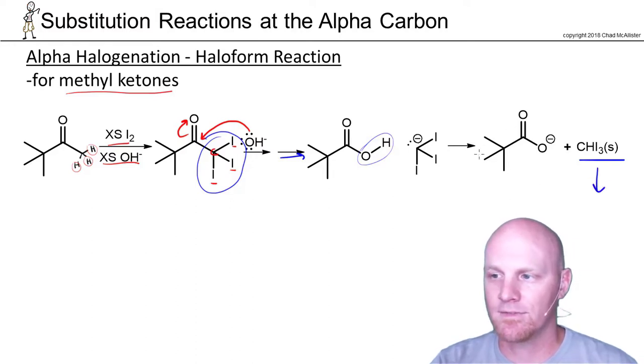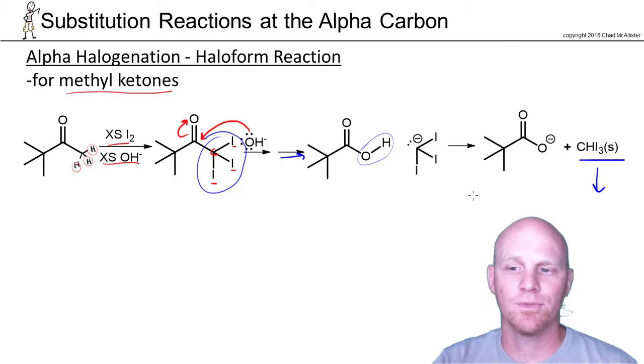This used to be a test for methyl ketones. You'd add excess iodine hydroxide, and if you got a yellow precipitate it meant you had a methyl ketone. If you didn't get a yellow precipitate, you didn't have a methyl ketone. That's the haloform reaction.